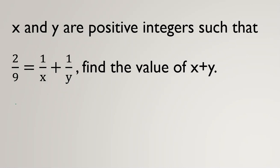If I want to get rid of them, I have 2/9 = 1/x + 1/y. I multiply by 9xy. Then we will have 2xy = 9y + 9x.